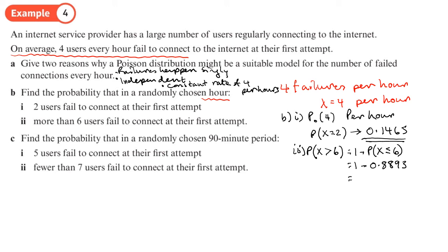So it's one minus 0.8893. So let's go back to calculator and do that. It's often useful to have two calculators, one where you can just do the calculations on and one where you can just work things out.